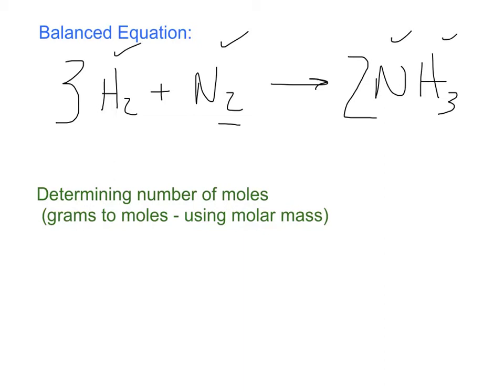I now have a perfectly balanced equation. What this tells me is that 3 moles of hydrogen gas plus 1 mole of nitrogen gas will create 2 moles of ammonia gas.